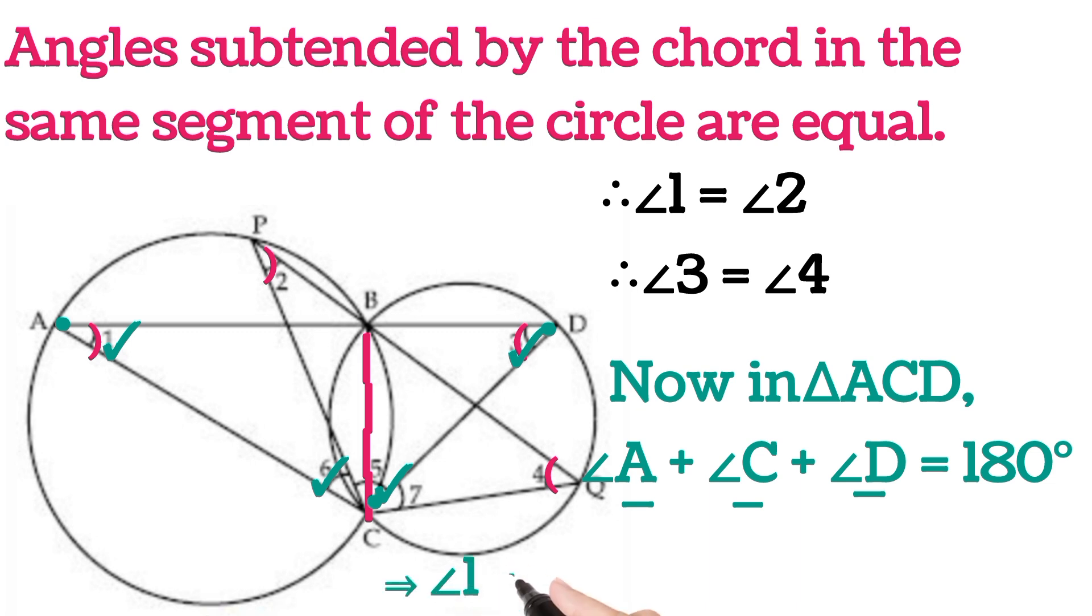We can write angle 1 plus angle 5 plus angle 6 plus angle 3 is equal to 180 degrees. This is equation number 1.